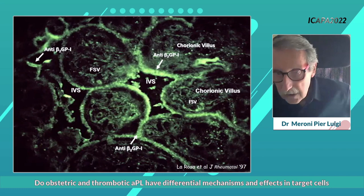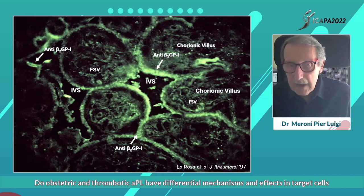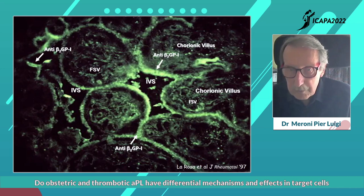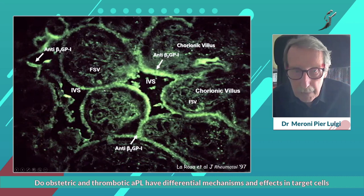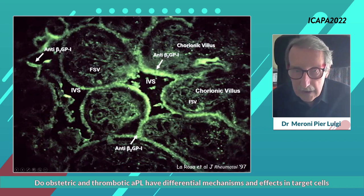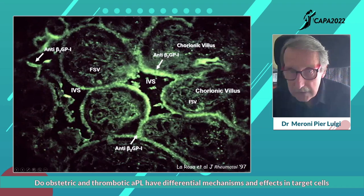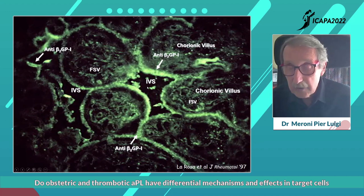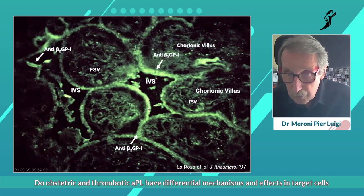The main difference between what is going on in the vessels and in the placenta is that even under physiological conditions, there is a huge amount of beta-2-glycoprotein-1 detectable on the surface of trophoblasts. These are villi cross-sectioned and stained with monoclonal antibodies against human beta-2-glycoprotein-1, showing a strong staining. More importantly, the beta-2-glycoprotein-1 in this location is in contact with the intervillous space and with the maternal blood, so maternal anti-beta-2-glycoprotein-1 antibodies can easily contact the beta-2 on the placental villi.